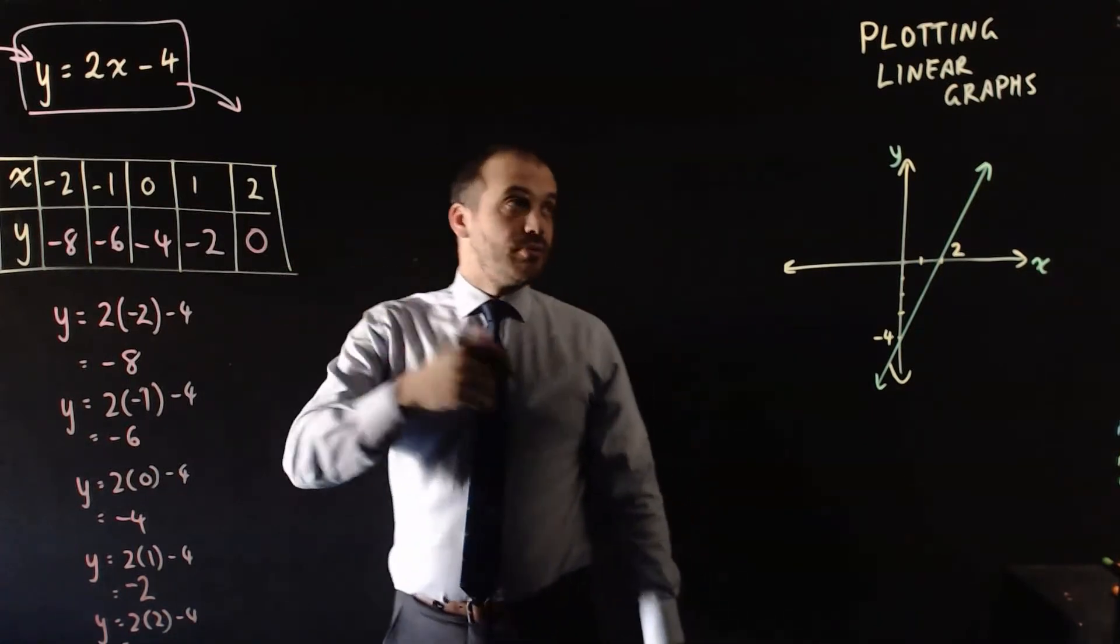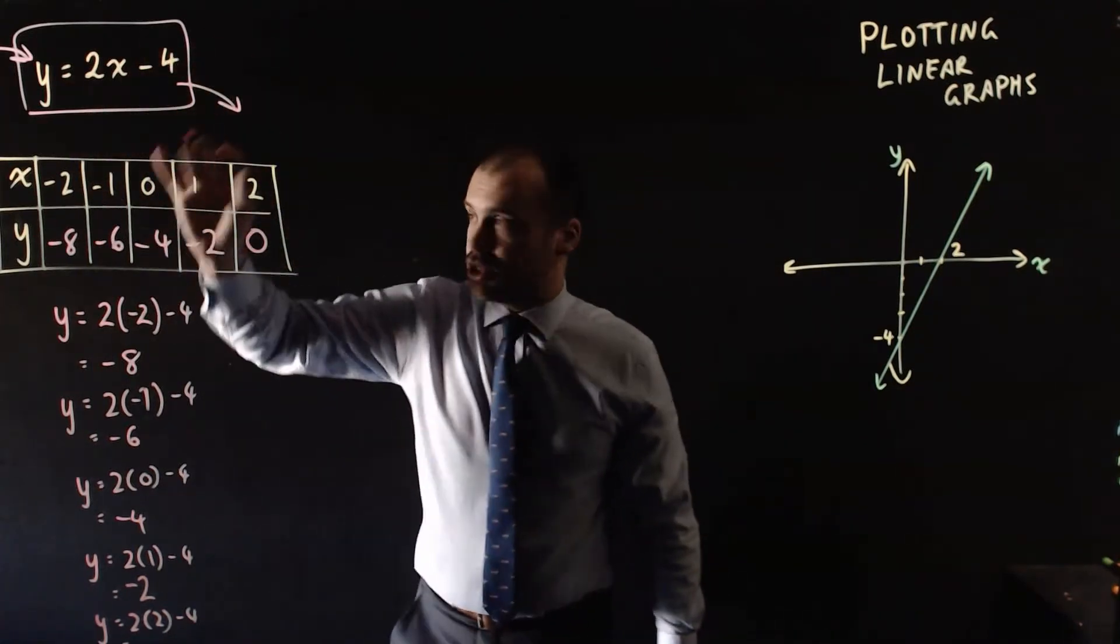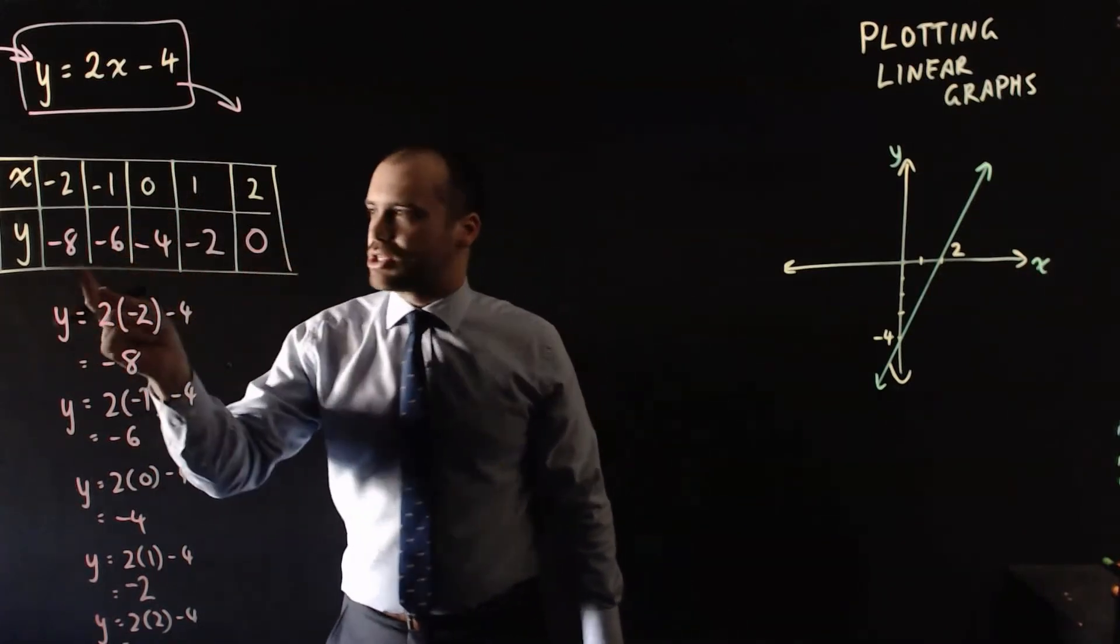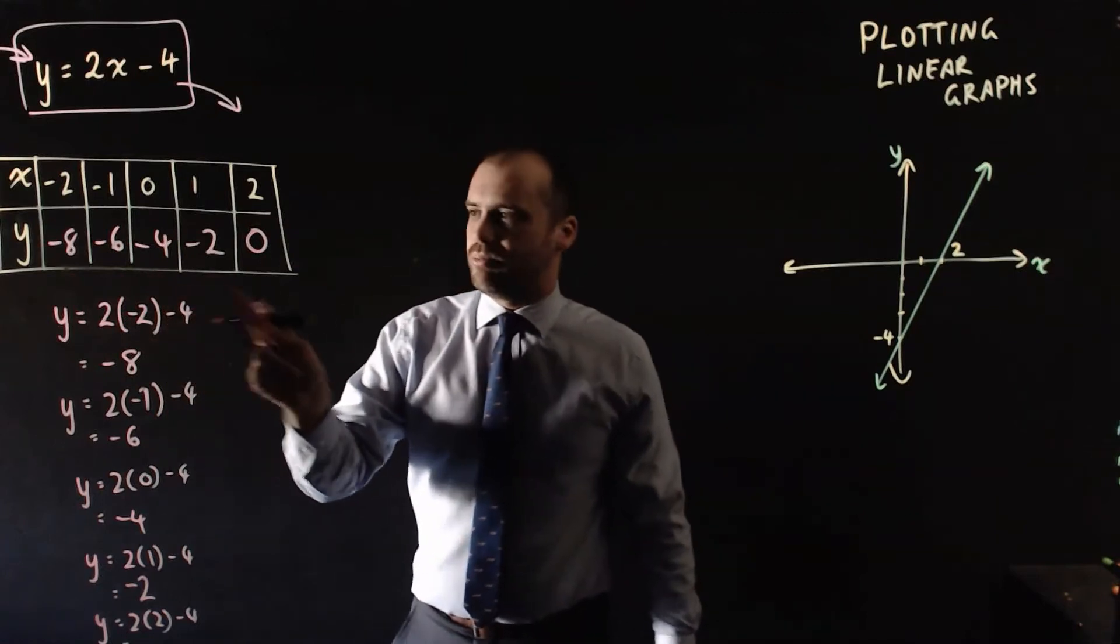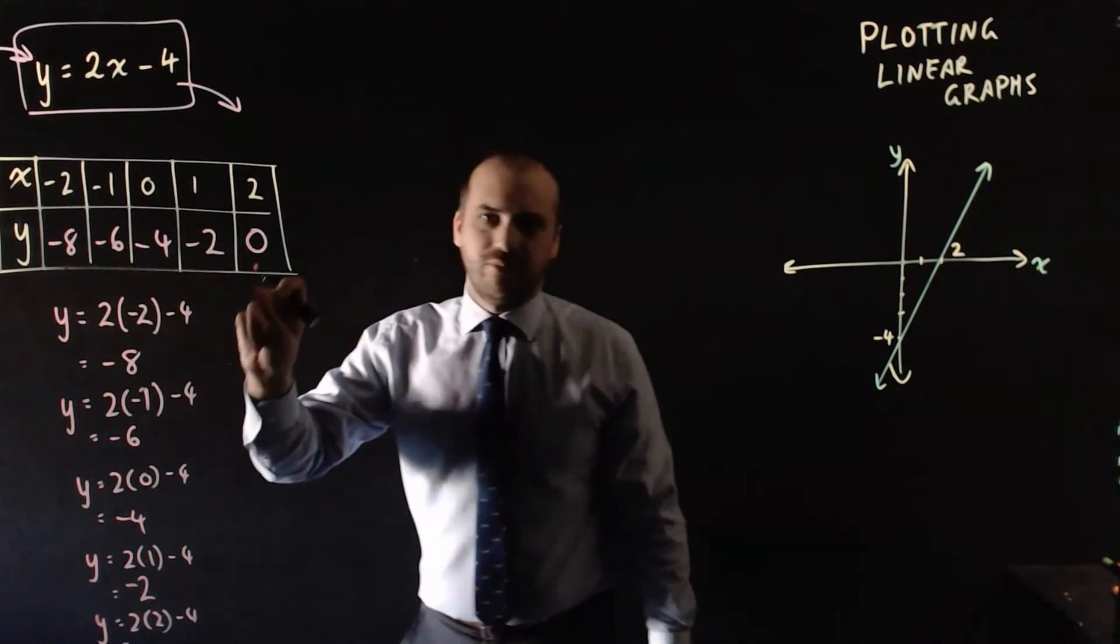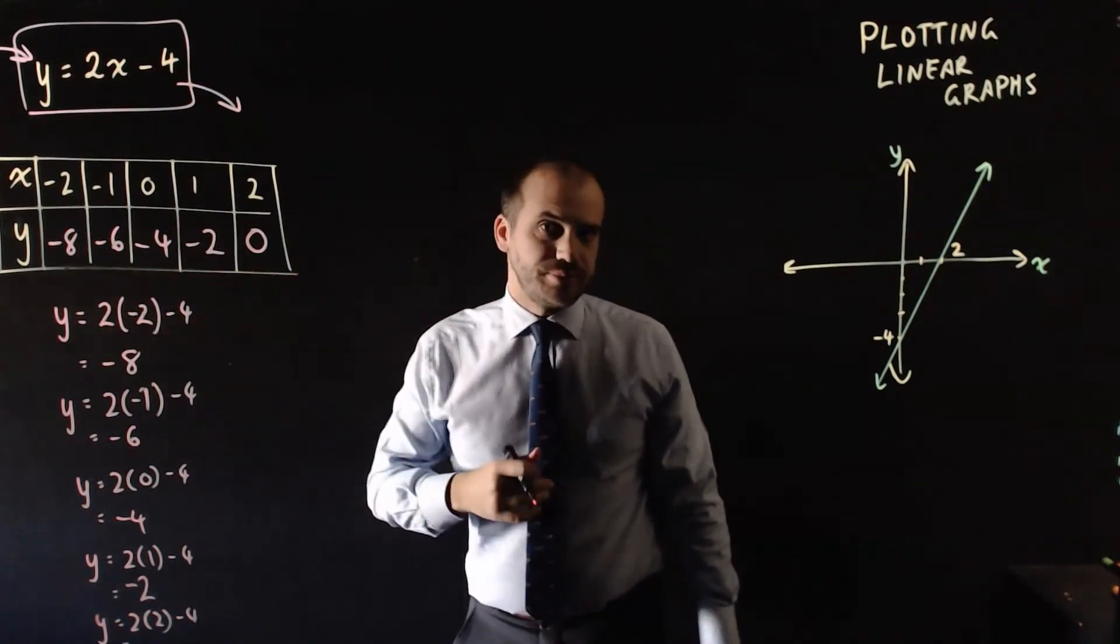Now, this is a linear graph. This is a linear equation. And this is always going to happen if you've got a linear equation, a nice, neat pattern. So if you know a couple of them, you can look at that difference and figure out what the rest are going to be.